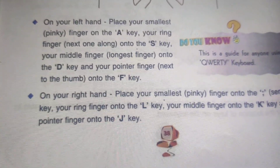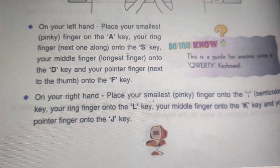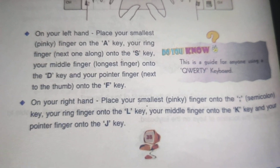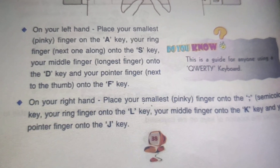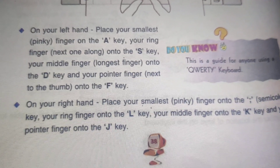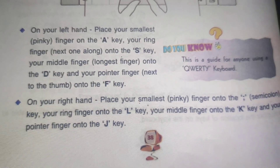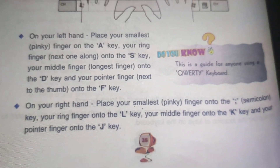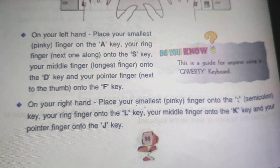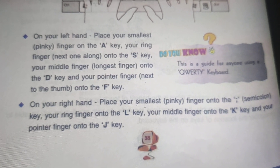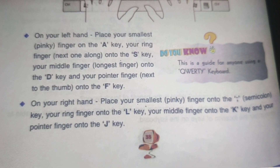On our right hand — place your smallest pinky finger on the semicolon key, your ring finger on the L key, your middle finger on the K key, and your pointer finger on the J key.